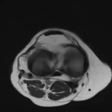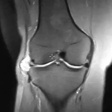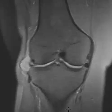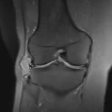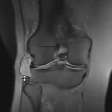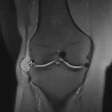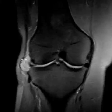On the coronal PD fat sat sequence, we can see the cyst as well. Now, we know this is a big lateral parameniscal cyst. However, there is also increased signal within the substance of the meniscus — the meniscus body and anterior horn show a horizontal band of signal that extends through the peripheral, middle, and inner thirds. It clearly contacts the capsular surface and fills up the parameniscal cyst.